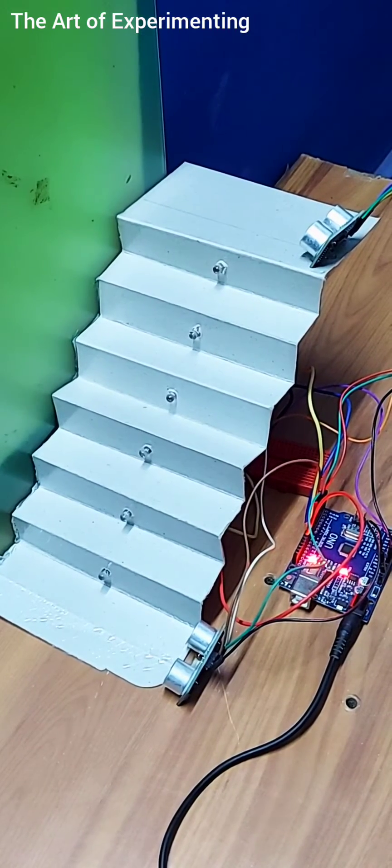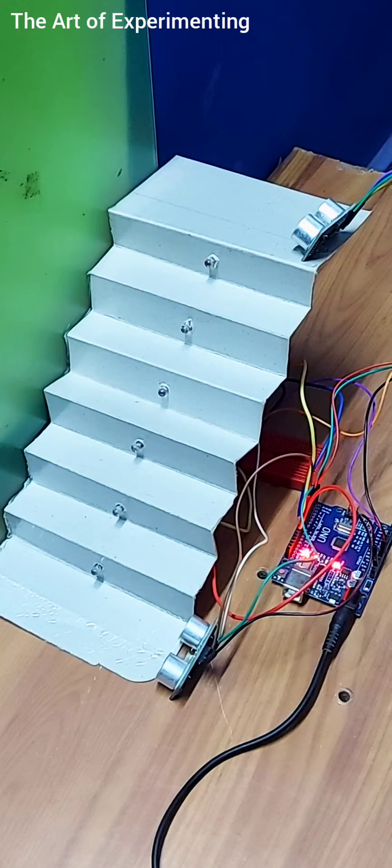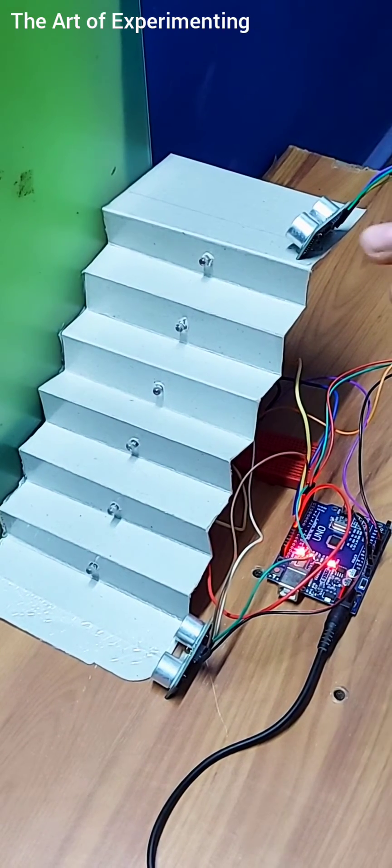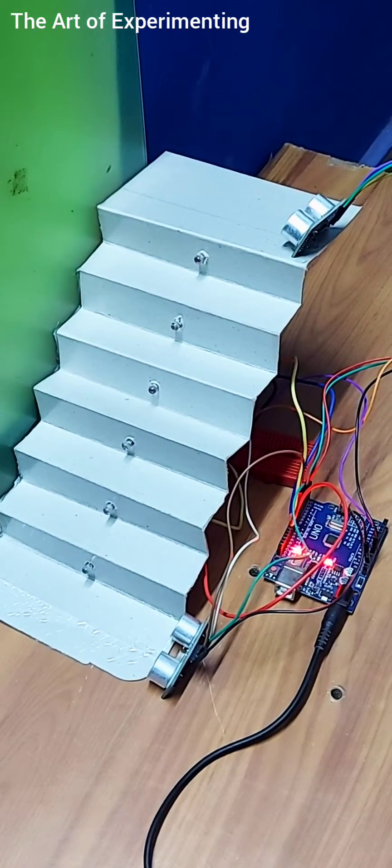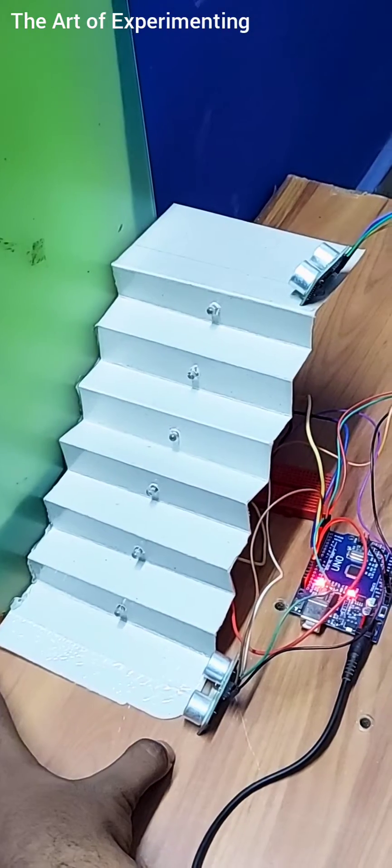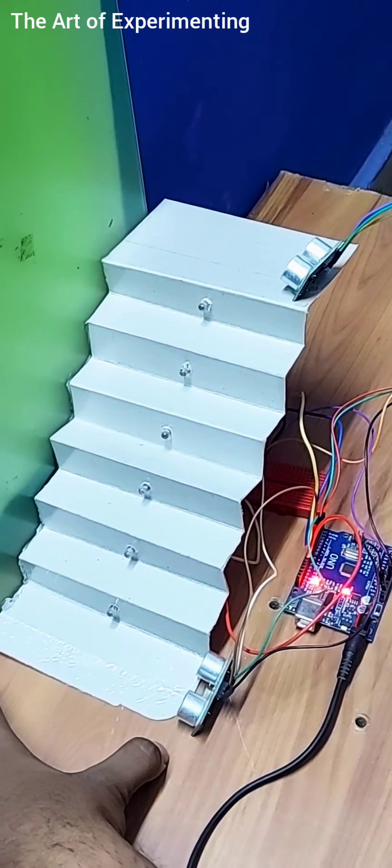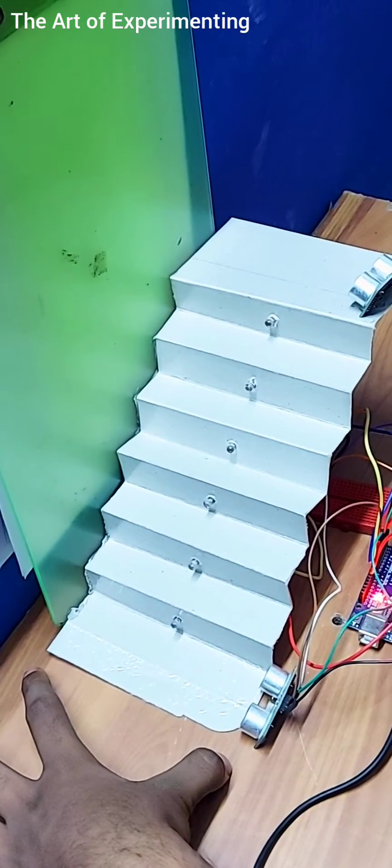If the user is going from the bottom towards the up, the LEDs will turn on from the bottom towards the up. The distance from the ultrasonic sensor against the wall is 12cm in this prototype.